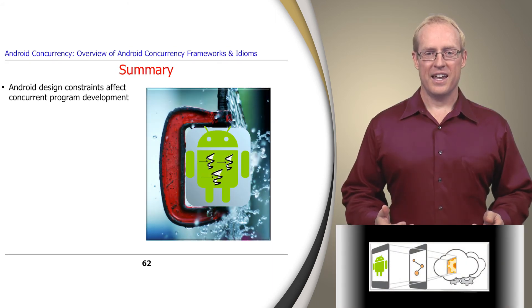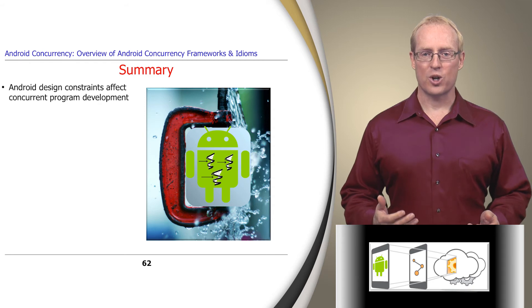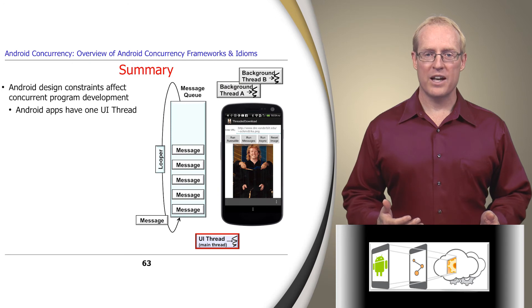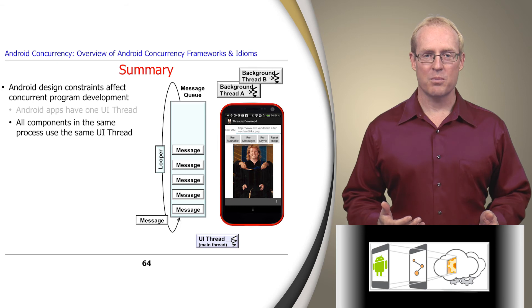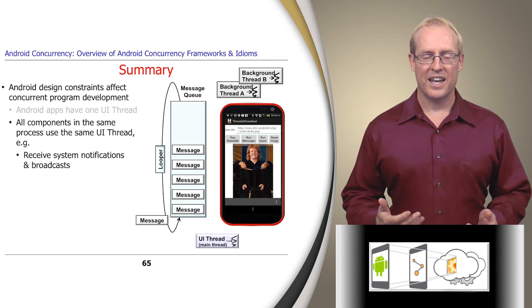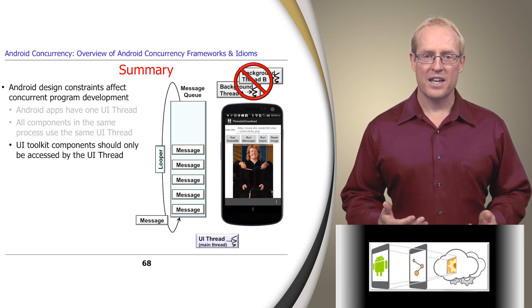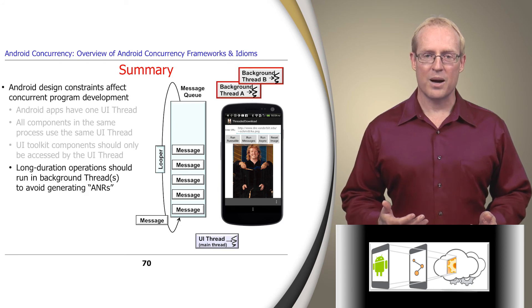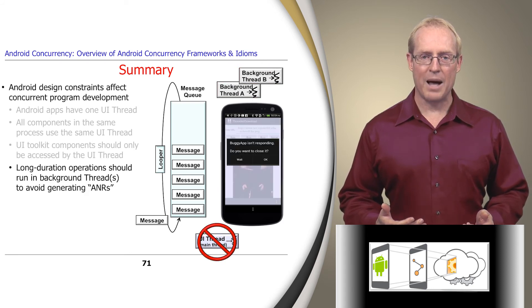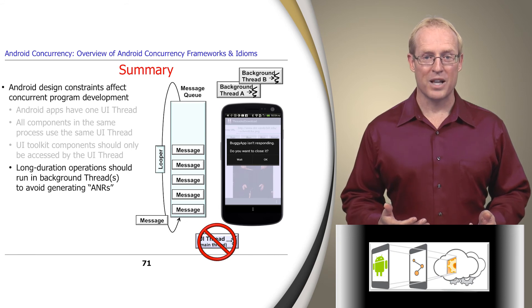In summary, Android has several design constraints that restrict how concurrent programs can be developed. For example, it only allows one thread to perform user interface operations per application. All components in the same application process use the same user interface thread to receive system-generated notifications and broadcasts, interact with users, and perform activity lifecycle methods. Since components in Android's user interface toolkit aren't thread-safe, they should only be accessed from the user interface thread. Likewise, long-duration operations should run in background threads to avoid generating application-not-responding dialogues if they block for more than a few seconds.